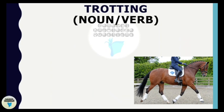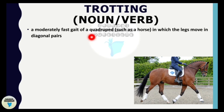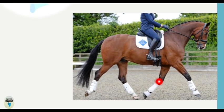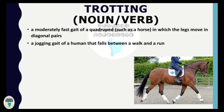The very first word we are going to learn is 'trot.' Trot is a noun and also used as a verb. It means a moderately fast gait of a quadruped such as a horse, in which the legs move in diagonal pairs. A quadruped has four legs. As you can see in the picture, the horse is moving forward and its diagonally opposite legs are moving in pairs.